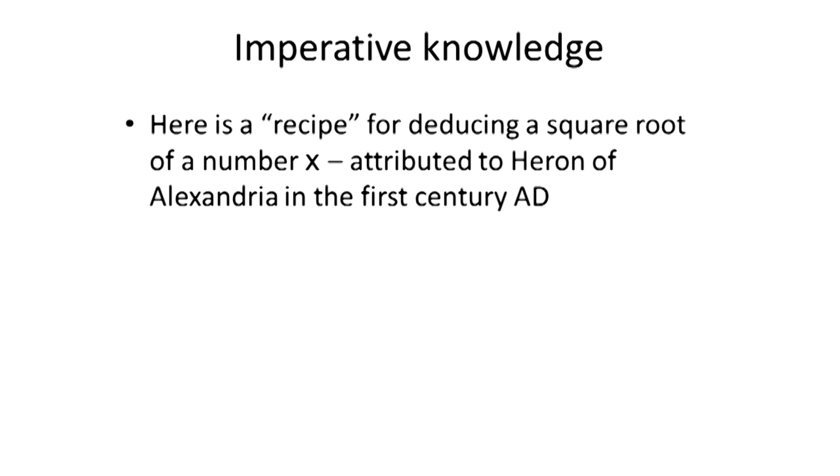Fortunately, we have imperative knowledge. Imperative knowledge is how-to kinds of knowledge, or methods, or recipes for finding something. Here's a recipe for deducing the square root. It's actually attributed to Heron of Alexandria, although there's some debate as to whether he was the original creator of this algorithm. But it dates from the first century AD. You can see the description here. The description says, if I want to find the square root of some number x, I'm going to start with a guess, I'll call it g.